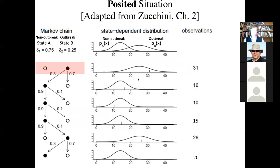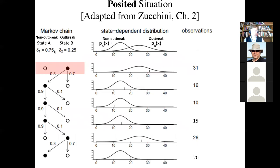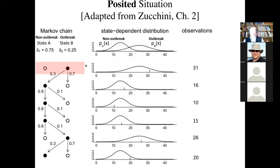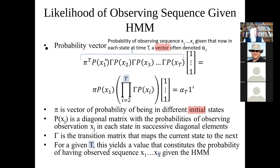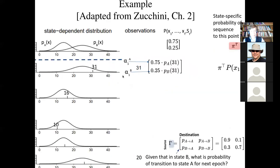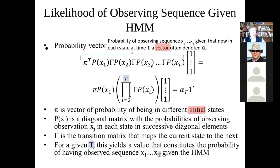So the idea here is we have a certain probability — written as Pi — of being in each state initially. Then we're going to have a probability for each possible state of observing the first observation. There'll be a transition matrix and the probability of observing the second observation, and so on. This is what's called the forward probabilities — I'm going to explain where this comes from in just a minute.